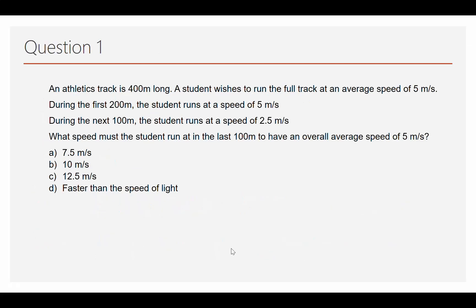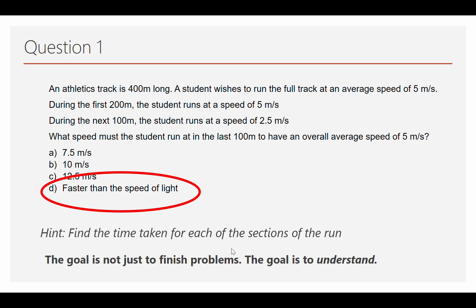So for the first question, with the athletics track being four hundred metres long, the student runs the first two hundred metres at five metres a second, the next one hundred metres at a speed of two point five metres a second. The answer, but not working, the answer is that they need to run faster than the speed of light in the last one hundred metres. If you didn't get that, you need to work back through and work out why that is the case. Here is a hint. You should find the time taken for each of the sections so far of their run. And this is because, remember, the goal is not to finish the problems, the goal is to understand. So I've given you the answer, I've given you a hint, you need to understand it before you move on. This is what a good scholarship student will do. They'll think about this problem for a while. They might think on it, you know, leave it and think on it overnight, a couple of days. They might go get help with it. It's that persistence and that thinking about physics all the time that's going to get you towards scholarship.